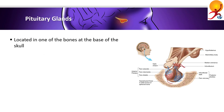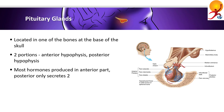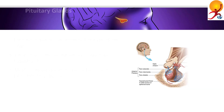The pituitary gland, or hypophysis, is located in one of the bones at the base of the skull, right where the skull meets your neck. It has two portions: the anterior hypophysis and the posterior hypophysis. Most hormones are produced in the anterior part, while the posterior part only secretes two hormones.